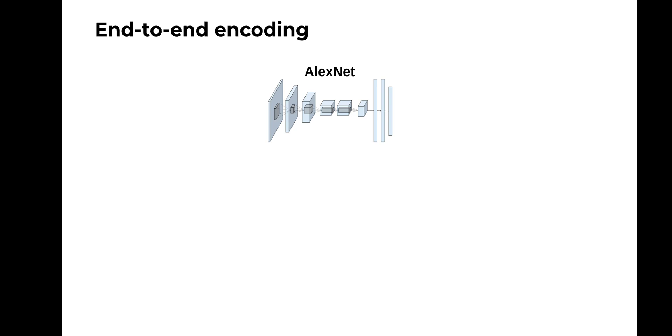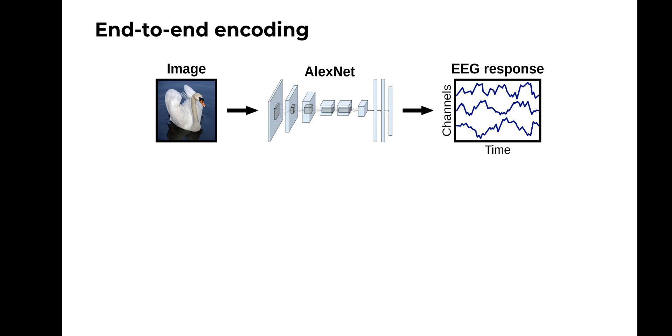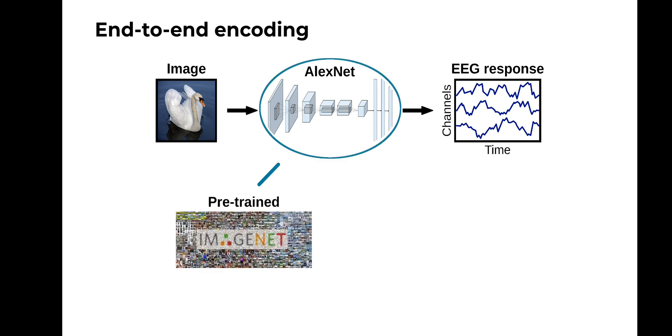The first question regards encoding models. Encoding models are nowadays a widely used method in computational visual neuroscience to both predict and explain the neural mechanisms of vision. They consist of algorithms, typically based on a deep learning architecture such as AlexNet, that take images as input and output the corresponding neural response. So far, encoding models have mostly leveraged deep learning architectures already pre-trained on computer vision tasks, and yet since computer vision tasks are not based on neural data, these models might not well reflect the representations of the visual brain.